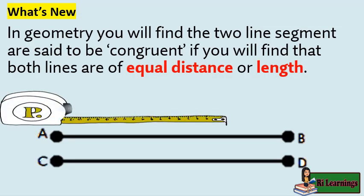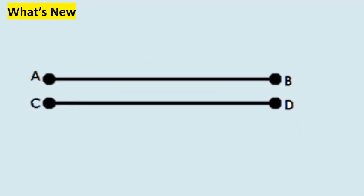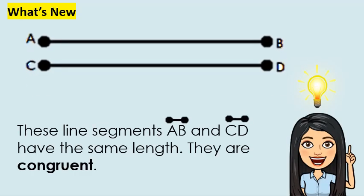Since congruence implies equal shape and size, in geometry the two line segments are said to be congruent if both lines are of equal distance or length. Since line segment AB and line segment CD have the same length, we can say that they are congruent.